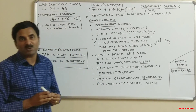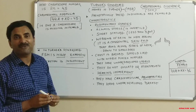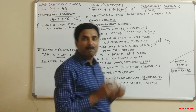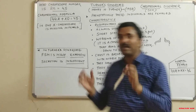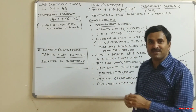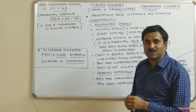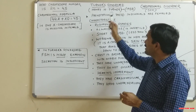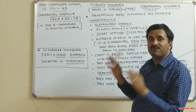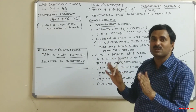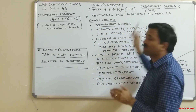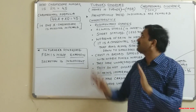As we know, there are two types of sex chromosomes: XX in the case of the female and XY in the case of the male. Turner syndrome is found in females — phenotypically, these individuals are female.